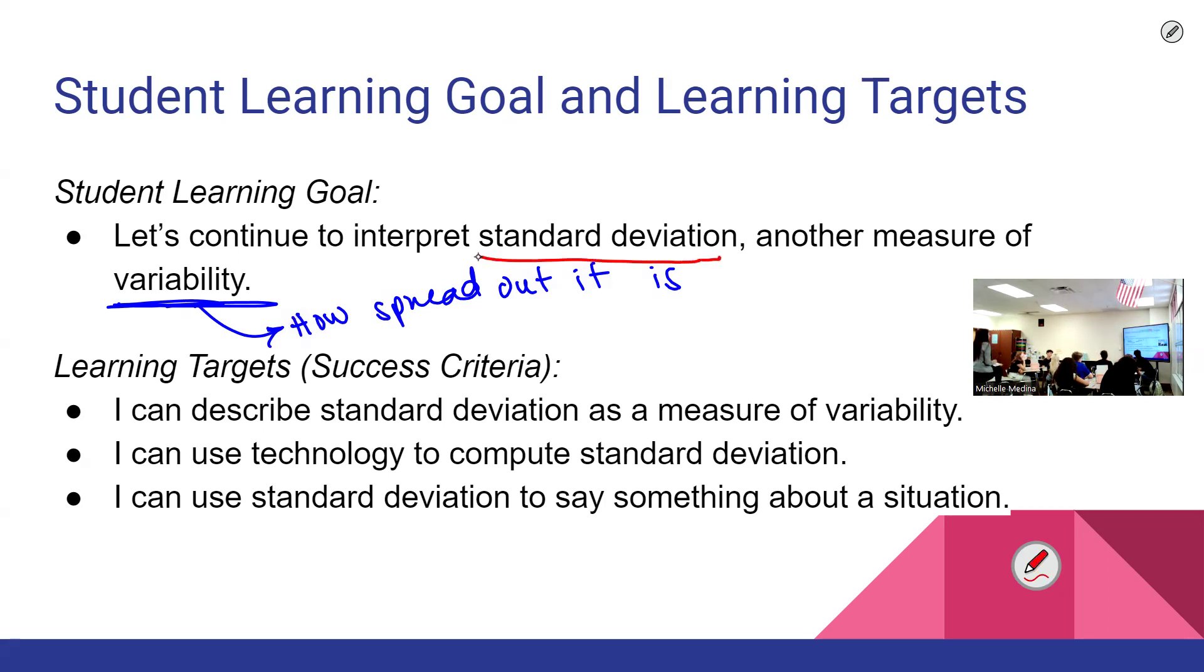Standard deviation and MAD, both of these are measures of variability. Both of them use the mean, so both of these variability measures get paired with the mean a lot. So then when do I use the mean over the median?